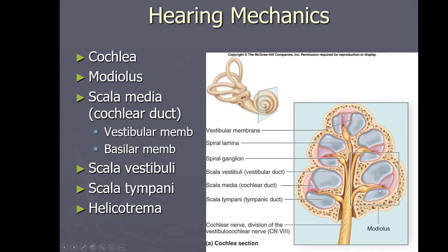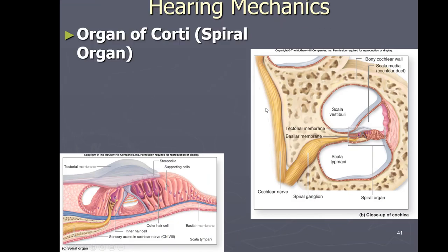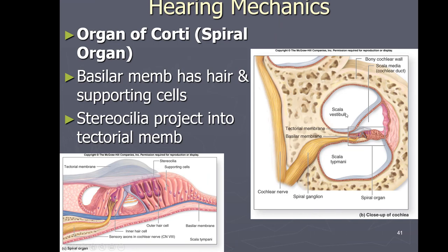The vestibular membrane is between the scala media and scala vestibuli, and the basilar membrane is on the base at the bottom. Following the spiral all the way to the end, that tip is called the helicotrema.